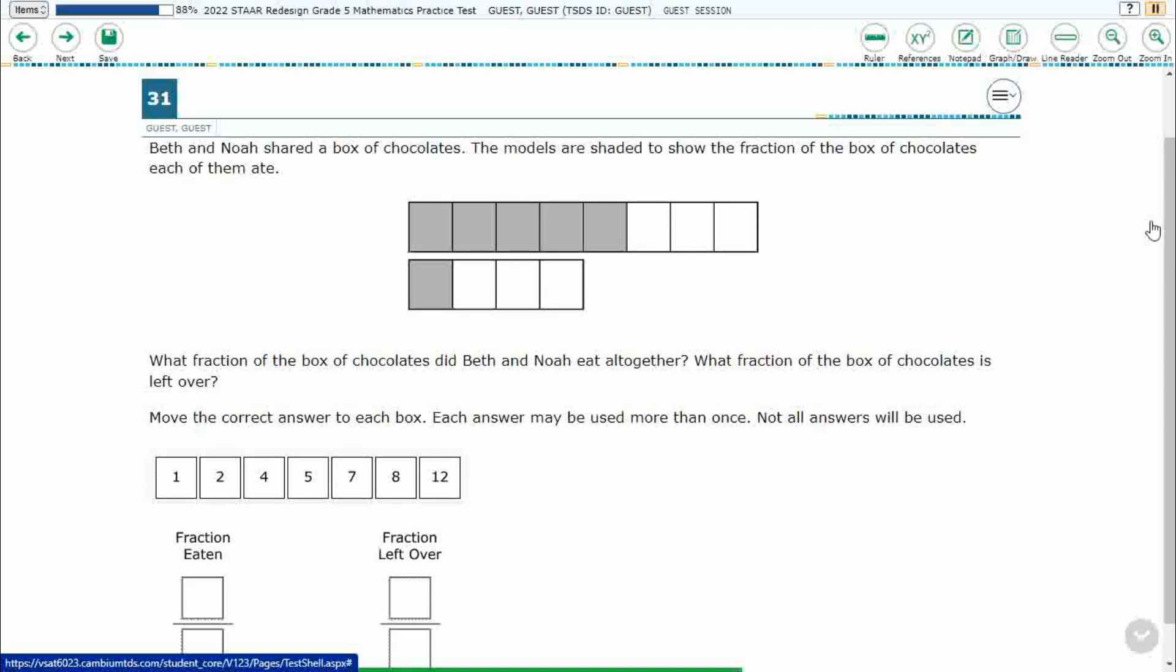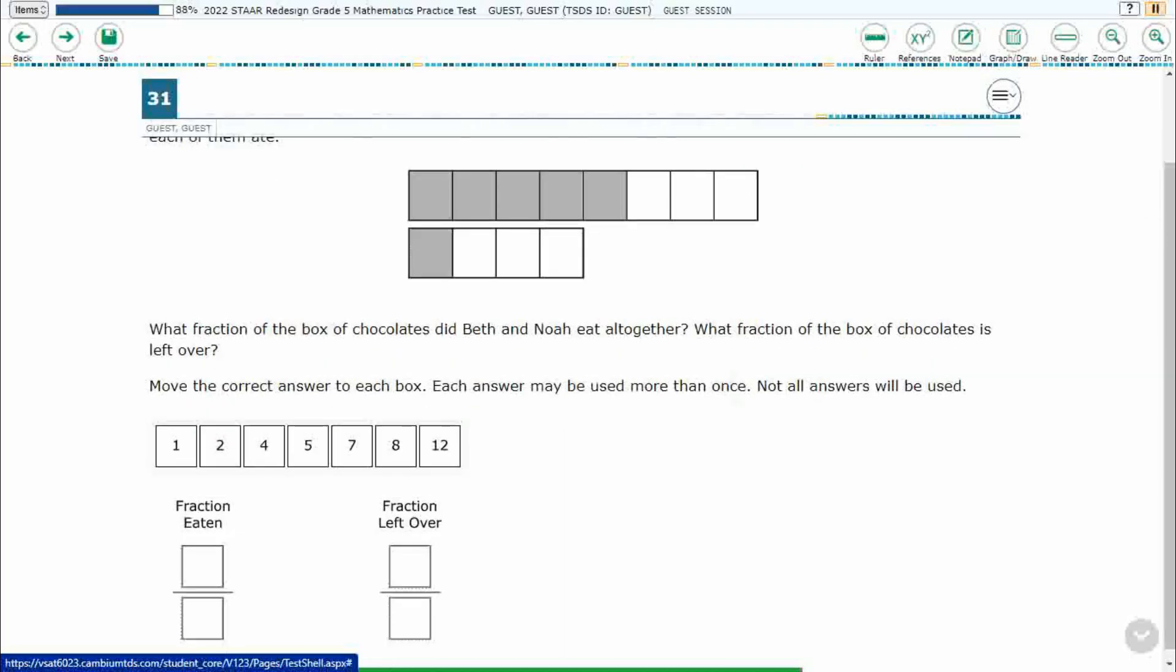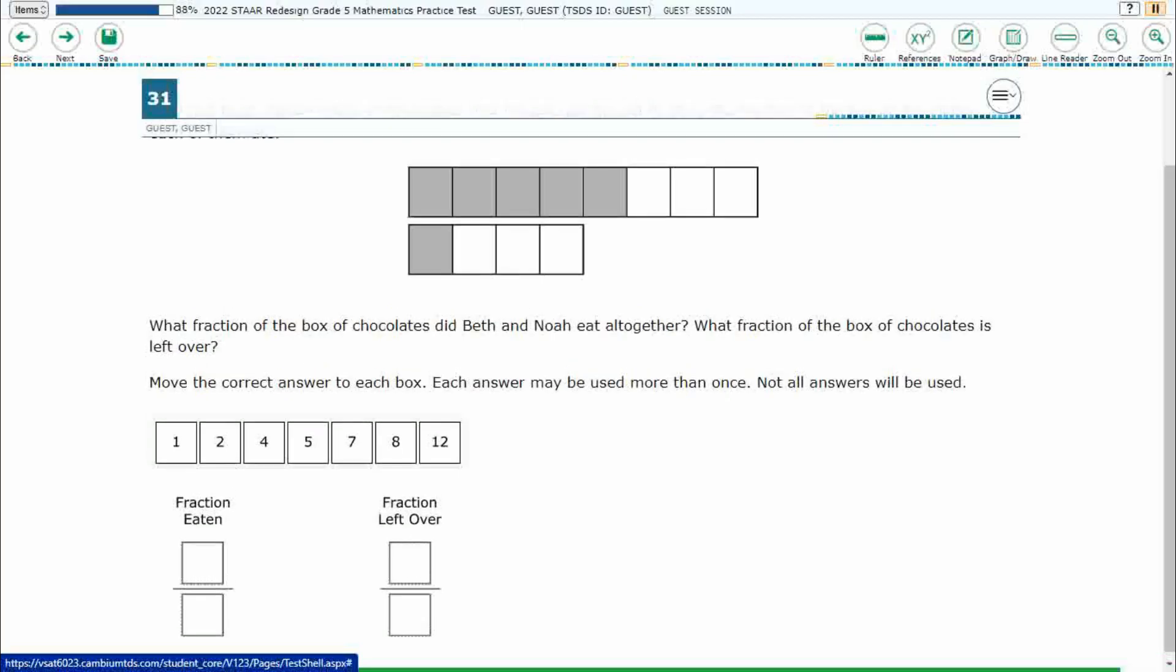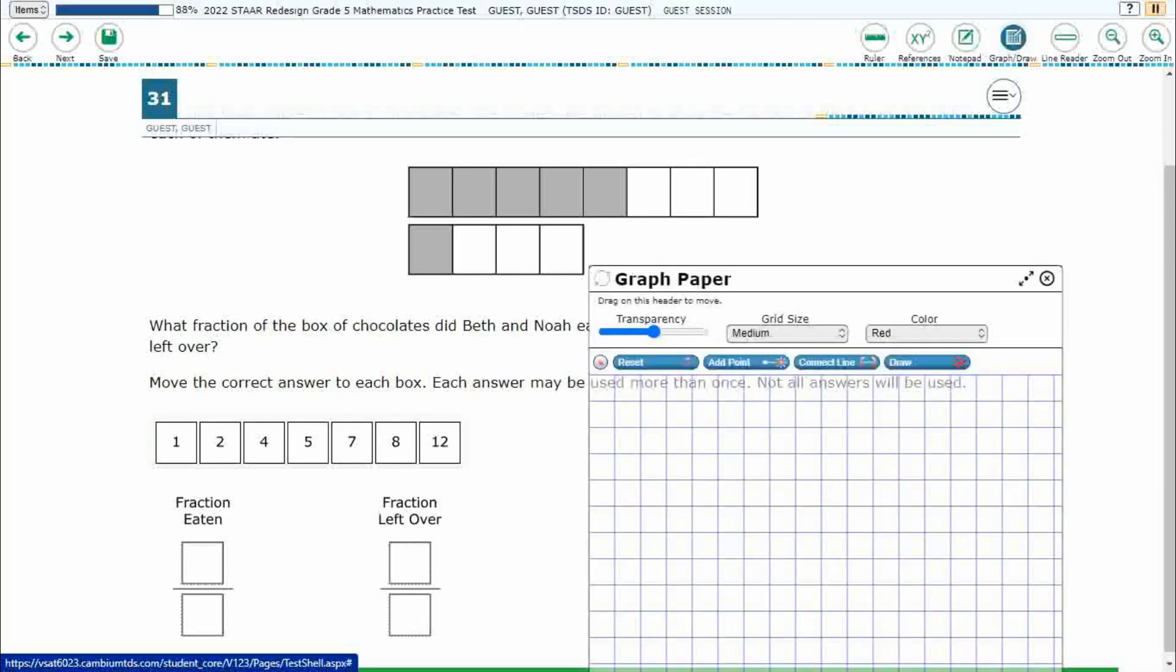So we've got Beth and Noah. They're sharing a box of chocolates. The models are shaded to show the fraction of the box of chocolates each of them ate. What fraction of the box of chocolates did Beth and Noah eat all together? And what fraction of the box of chocolates is left over? Okay, so take a look at this. We actually have two different numbers we're looking for.